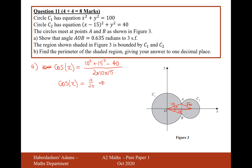So X equals cos inverse of 19 over 20, which is 0.31756 radians. Therefore angle AOB is 2 times this angle: 2 times 0.31756 equals 0.635 radians to three significant figures.